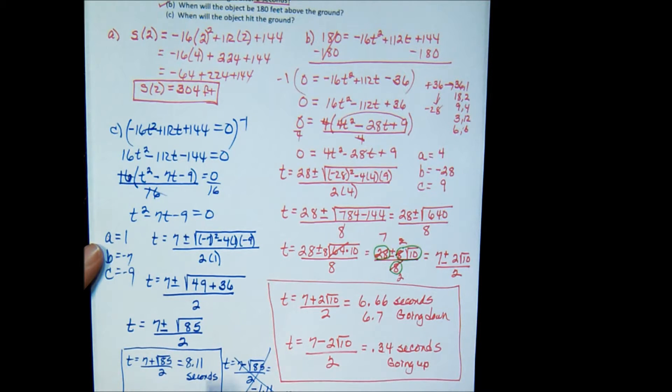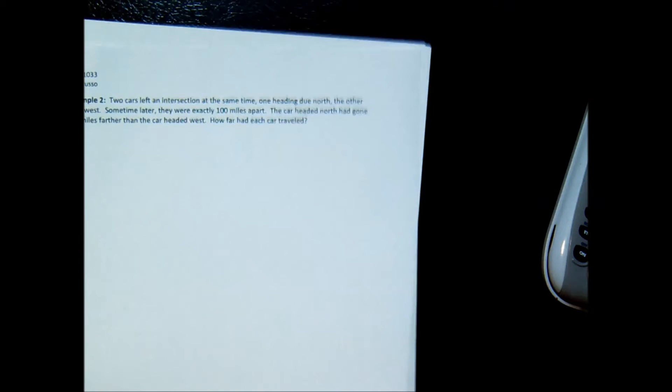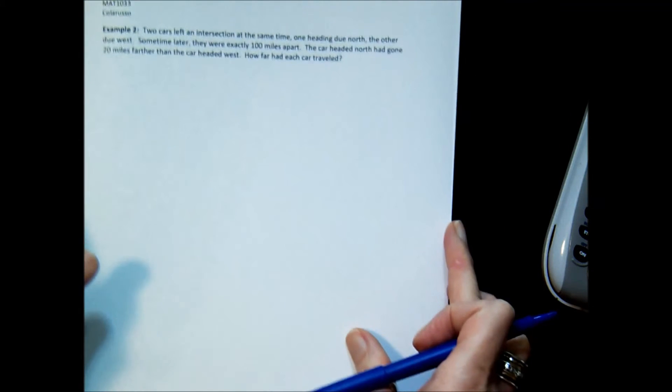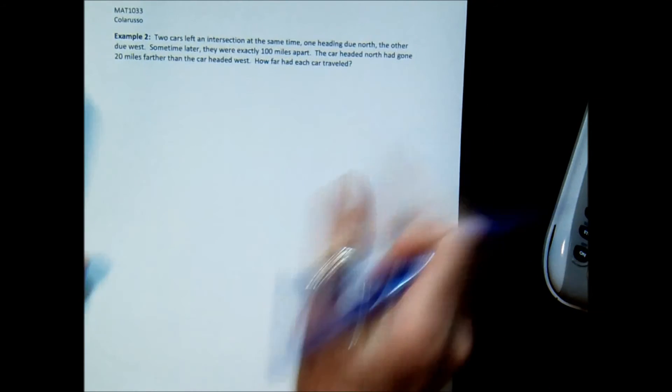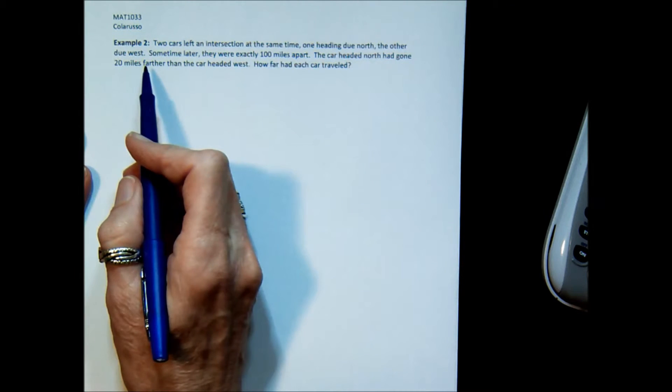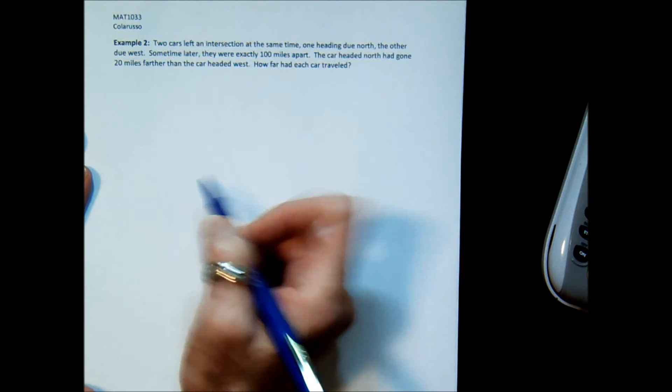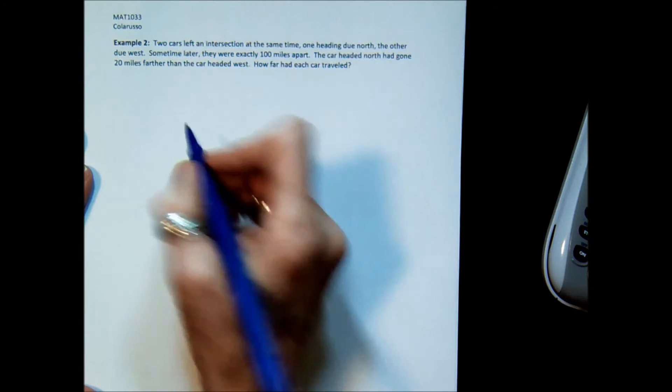And we know that the object will hit the ground in 8.11 seconds. And it makes sense because it's got to be more seconds than when it was still off the ground. And in 6.7 seconds, it was still off the ground. There was a lot of work to that problem. Let's look at one more type of application with equations that are quadratic in form. Example 2. It says two cars left an intersection at the same time. One heading due north, the other heading due west. Sometime later, they were exactly 100 miles apart. Now before we go any further, I need to kind of get this sketched.